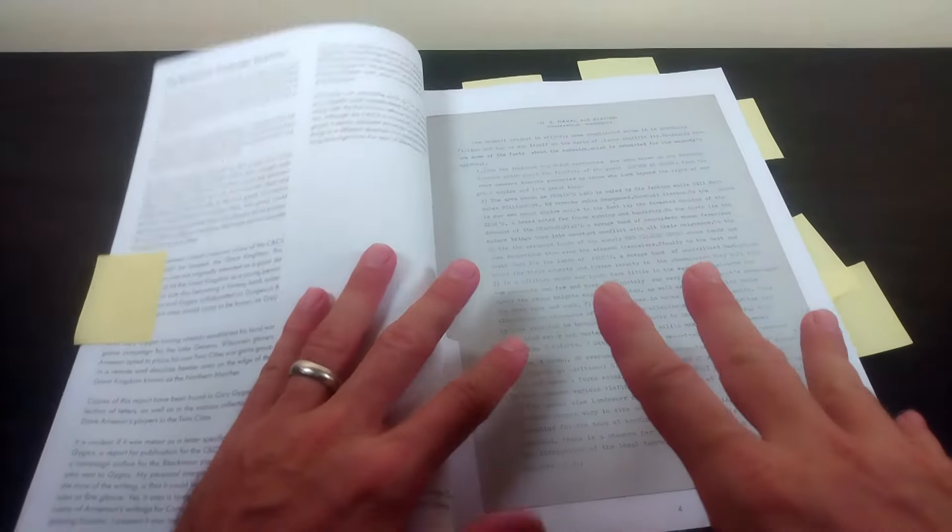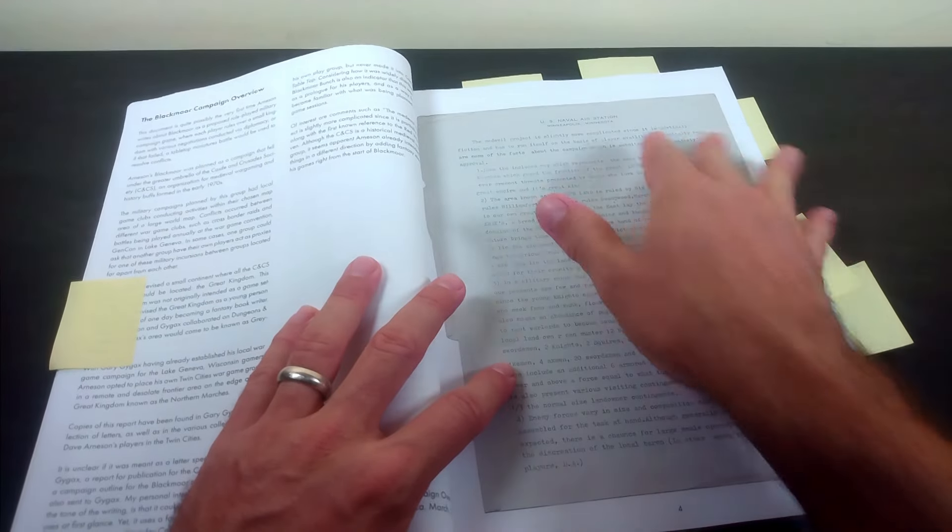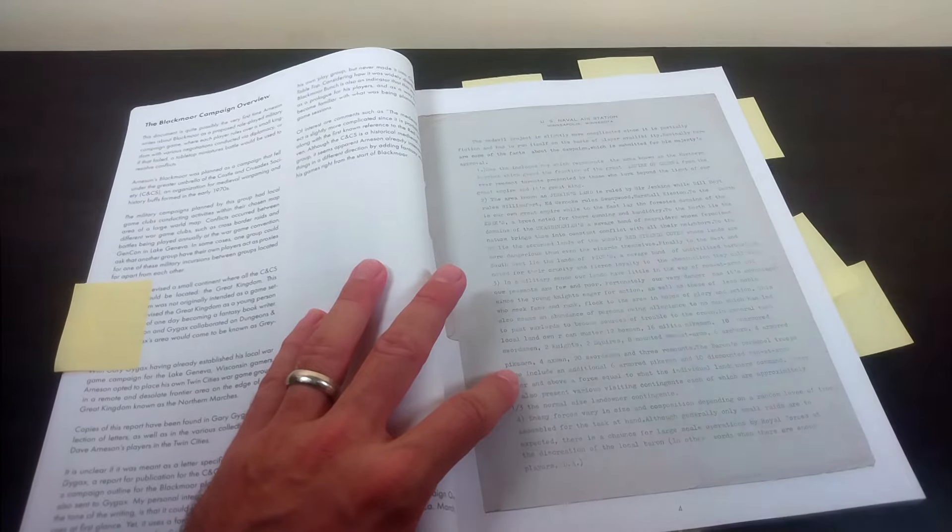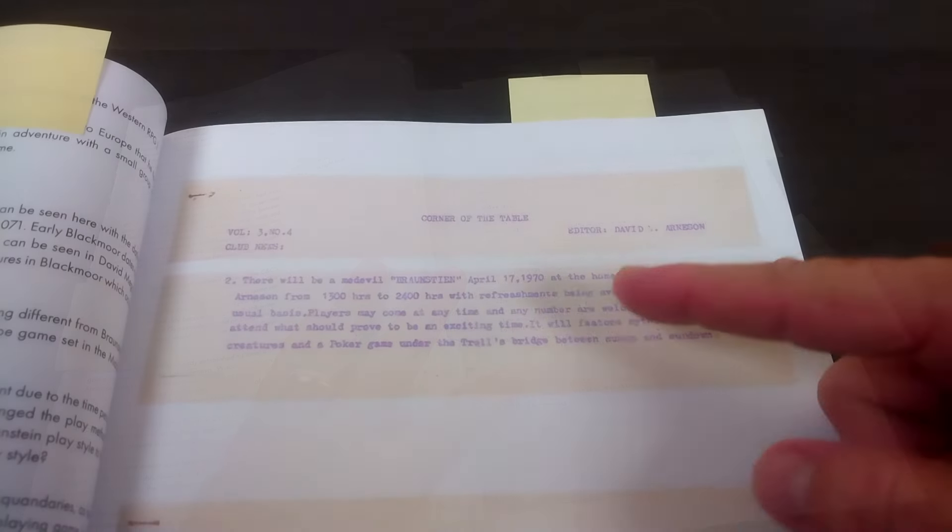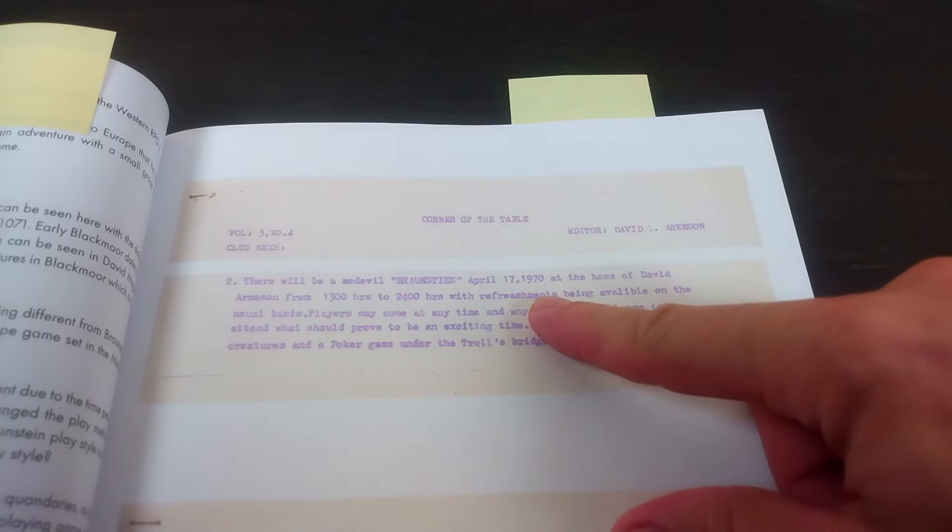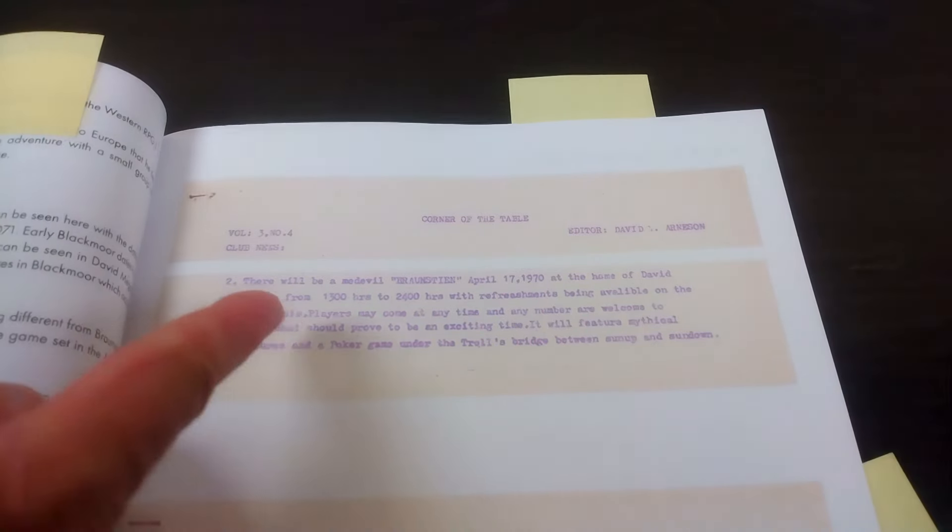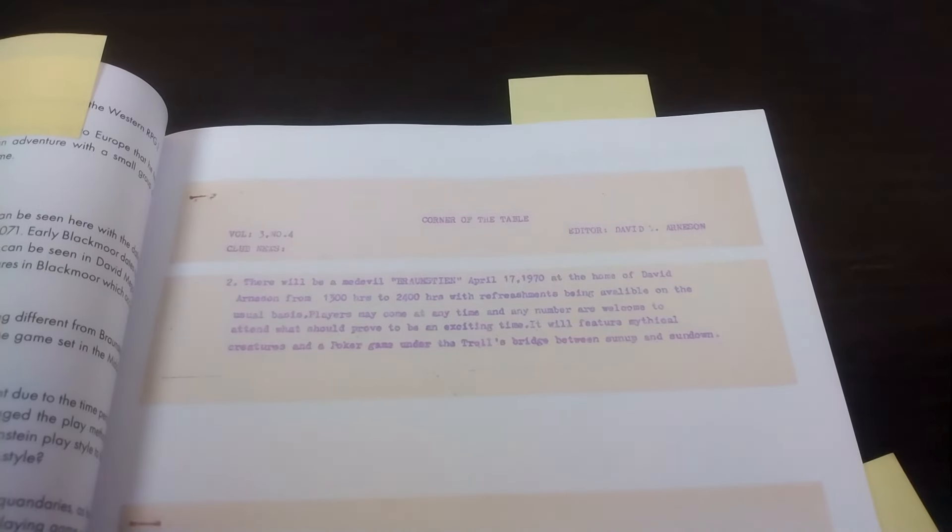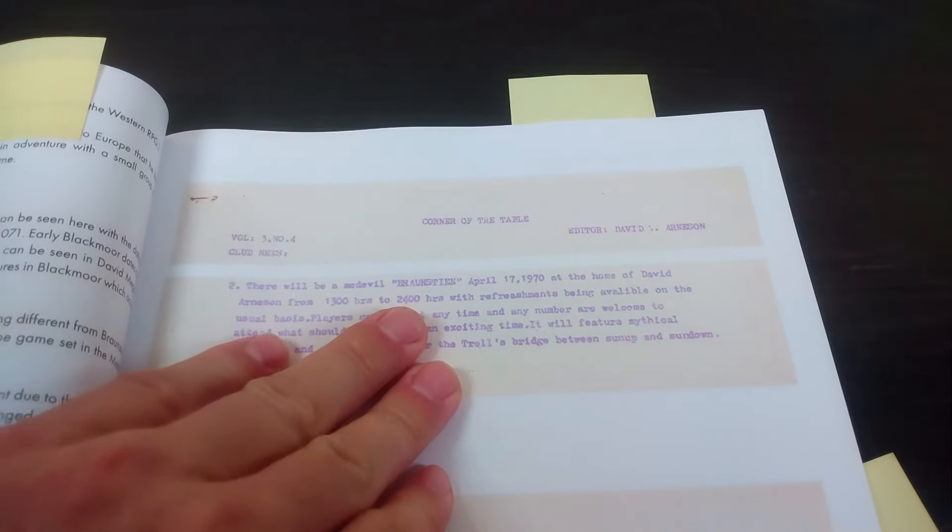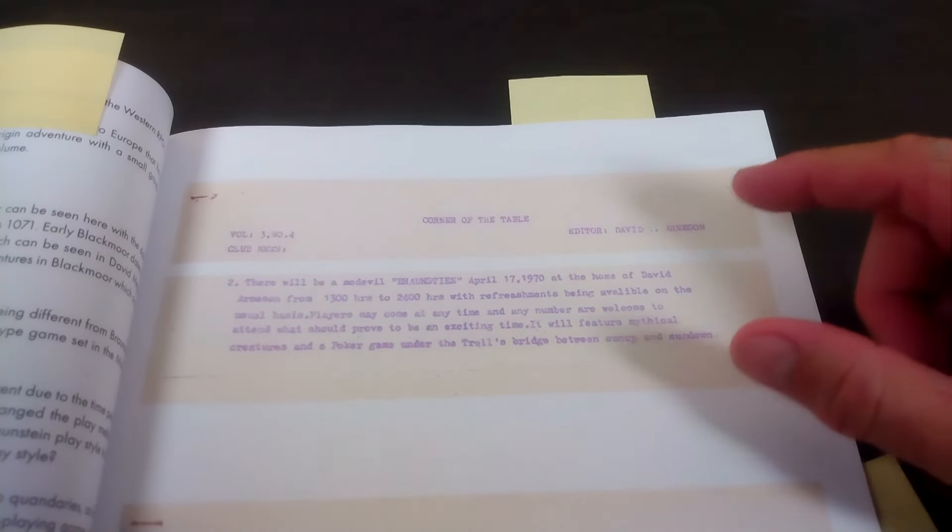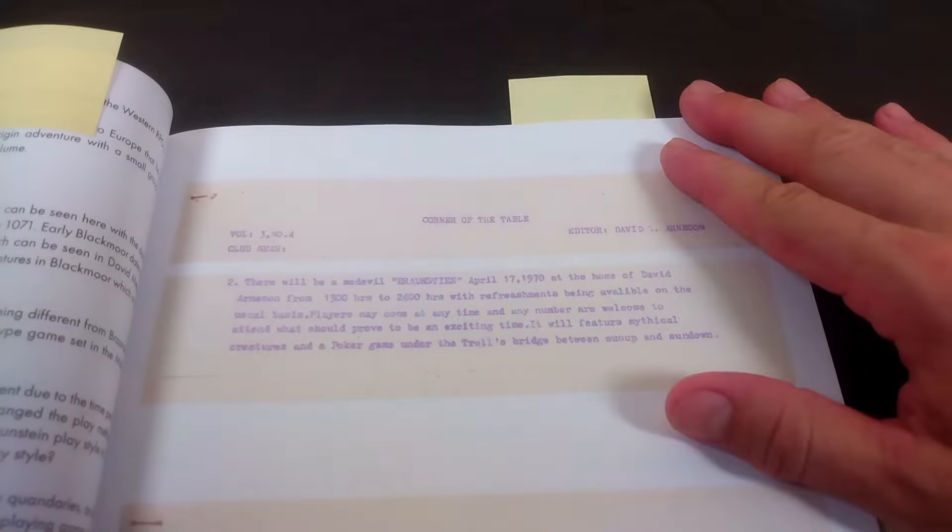From the medieval Braunstein to the first role-playing game. And here's the notice: there will be a medieval Braunstein April 17th, 1970 at the home of Dave Arneson from 1 in the afternoon to midnight. Oh man, 11-hour game sessions! Brutal baby, brutal. And this was after the meeting of the Napoleonic Society. That's a whole day of gaming, man, that's like a one-man convention. Very impressive stuff.